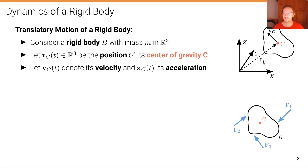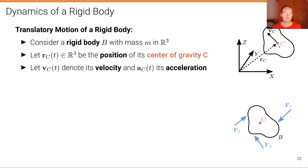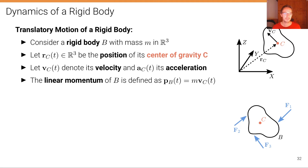Now let's consider the translatory motion of a rigid body instead. This rigid body has a mass m. Let r again denote the position, but in this case the position of the center of gravity c of that rigid body b. Let vc denote the velocity and ac the acceleration at the center of gravity of that rigid body.